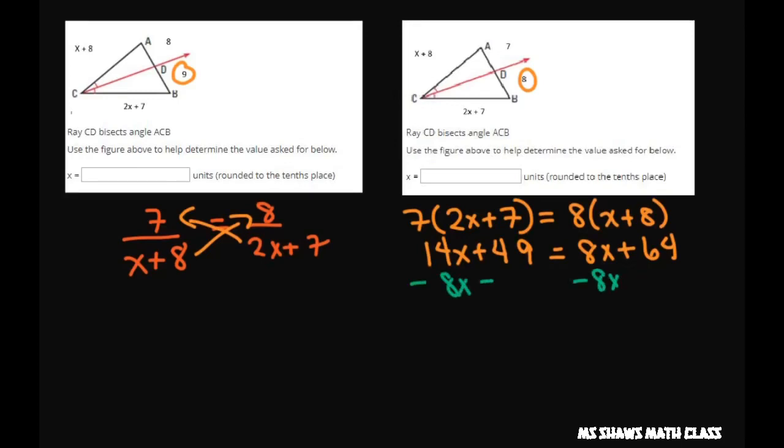At the same time subtract 49 from both sides of the equation, and this is going to give us 6x equals 64 minus 49, which gives me 15.